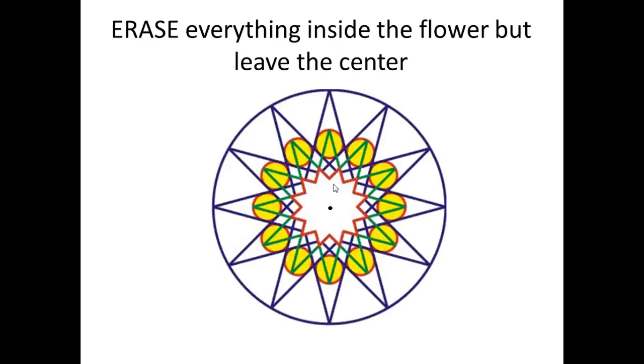Erase everything inside the flower but leave the center. See all these messy lines are gone. Erase them. Leave the dark outline of the flower. And you are almost done.